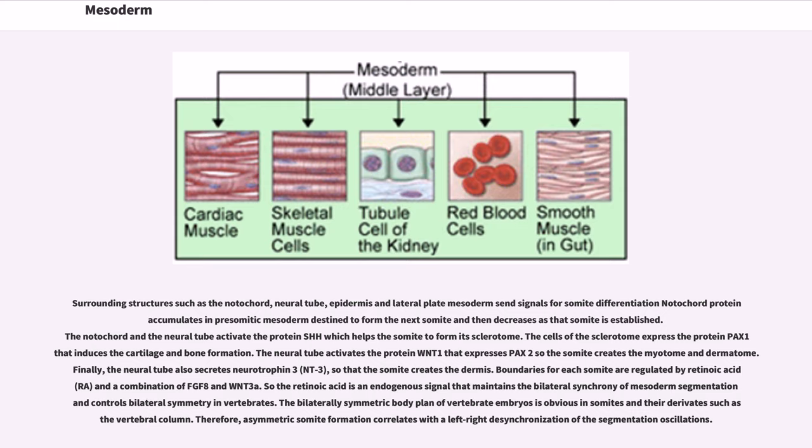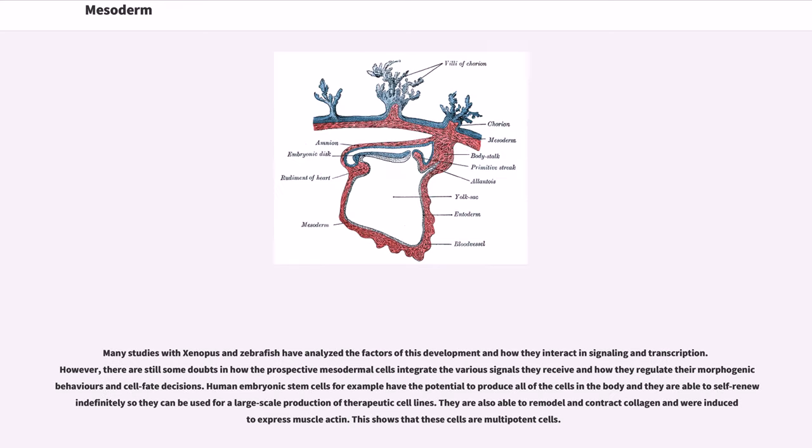Many studies with Xenopus and zebrafish have analyzed the factors of this development and how they interact in signaling and transcription. However, there are still some doubts in how the prospective mesodermal cells integrate the various signals they receive and how they regulate their morphogenic behaviors and cell fate decisions. Human embryonic stem cells for example have the potential to produce all of the cells in the body and they are able to self-renew indefinitely so they can be used for large-scale production of therapeutic cell lines. They are also able to remodel and contract collagen and were induced to express muscle actin, showing that these cells are multipotent.